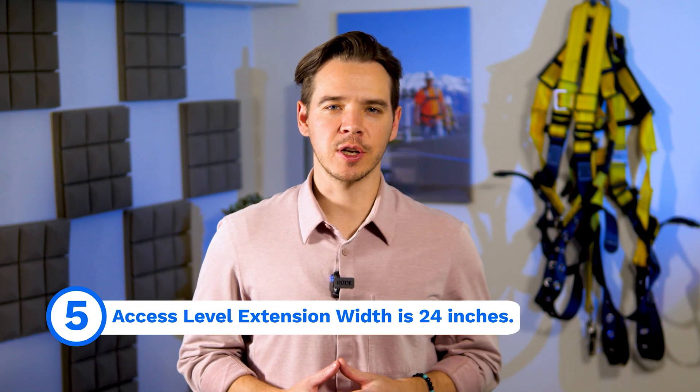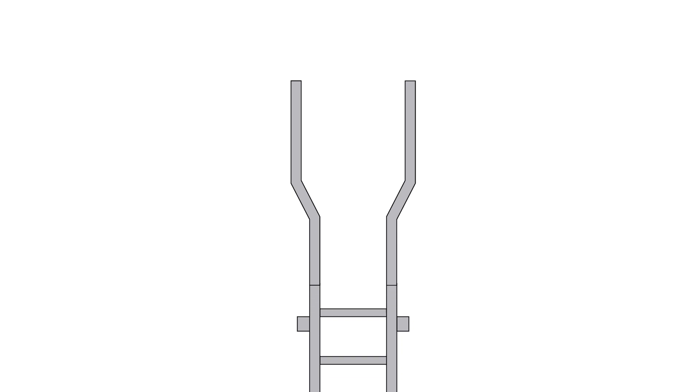Number five, access level extension width is 24 inches. This last measurement needs to extend above the access level, a minimum of 24 inches, but no more than 30. This makes it easier for the climber to reach both handrails.